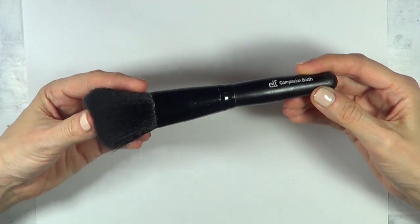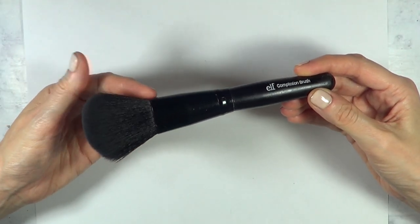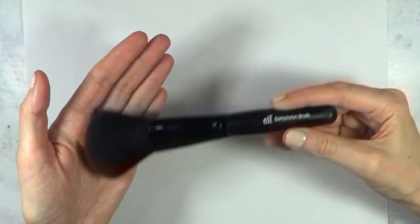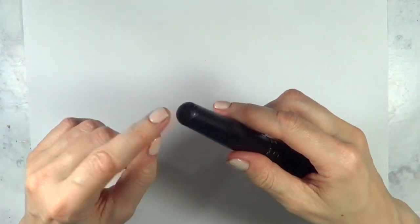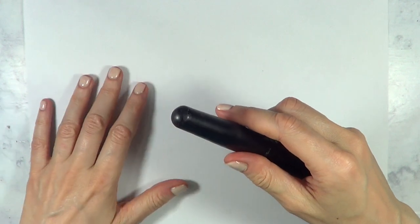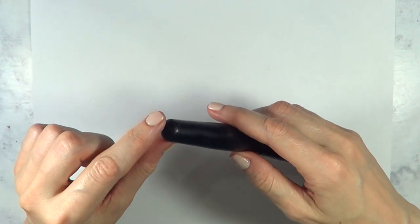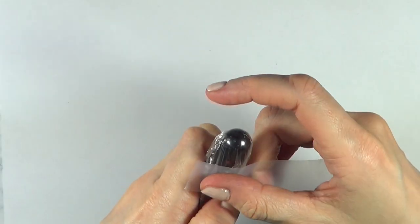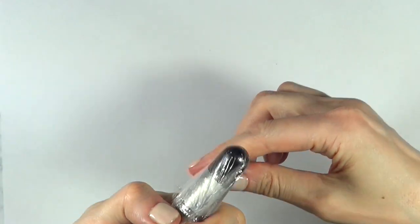For this one I'm going to be using this makeup brush. This is an ELF complexion brush, but I use it for blush. I'm going to be using this round end, but if you don't wear makeup just look for something that has this shape on it. I'm going to be taking a piece of cling film and I'm just going to wrap it around that part and tape it so it doesn't move.